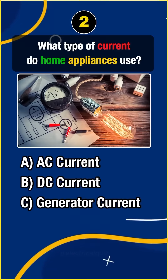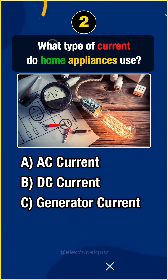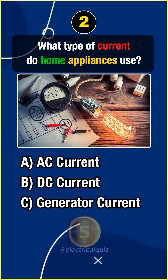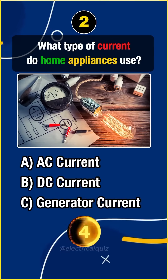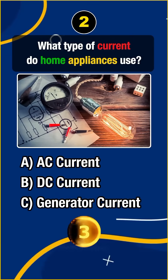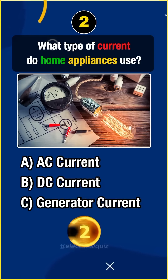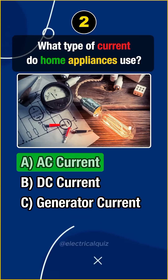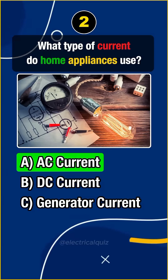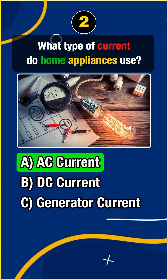Question 2. What type of current do home appliances use? Answer A: Alternating current.